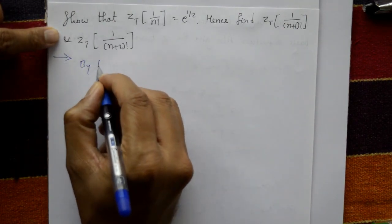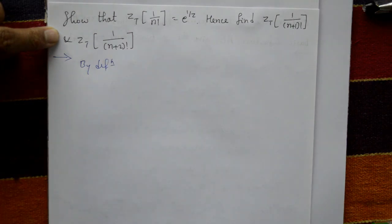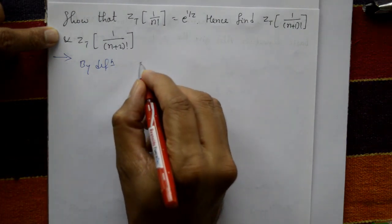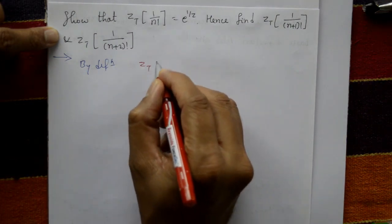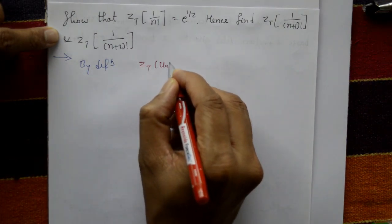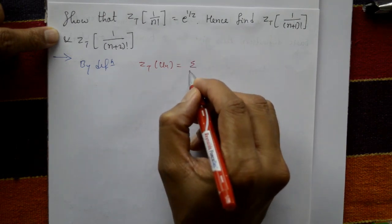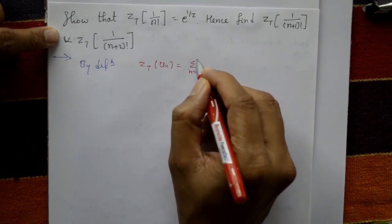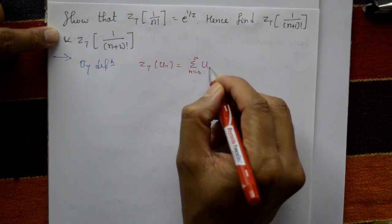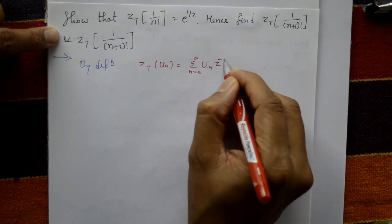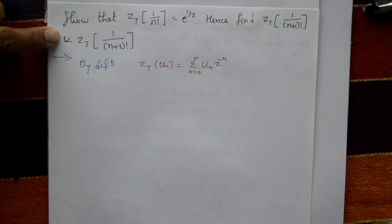By definition, the Z transform of u_n is equal to summation n equals 0 to infinity of u_n times Z to the minus n. This is the definition.